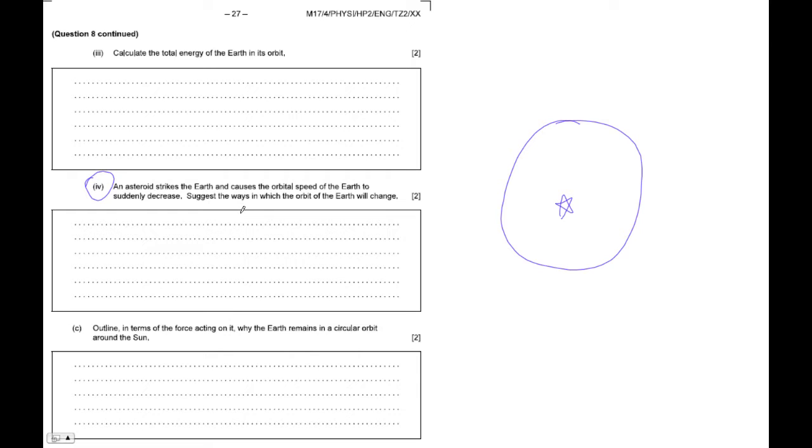An asteroid strikes the earth in such a way as to change its orbit without destroying the earth. Anyway, let's just go with it. So here's the earth moving around the sun and the asteroid goes smack into it. It slows down.